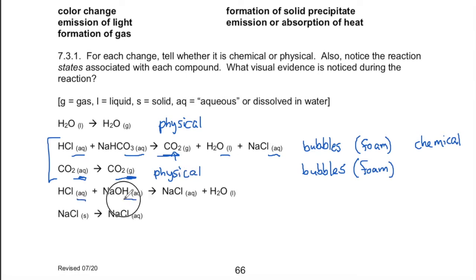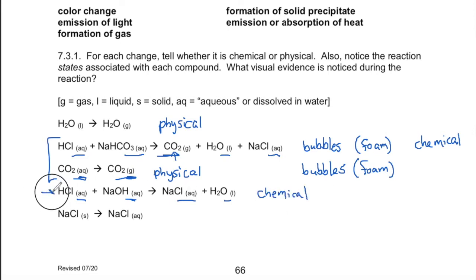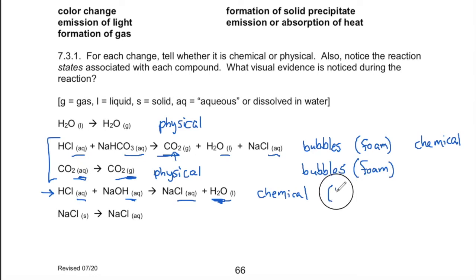Here we have something that looks like water and something that looks like water producing water and something else that also looks like water — so this would not look like very much. This is a chemical change. An acid and a base reacting together produce water, which is very energetically favorable. If you're not familiar with this, you wouldn't know it, but acid and base reacting together is very energetically favorable. It wouldn't look like much, but heat would be generated — your test tube would look like water, but it would get warm.